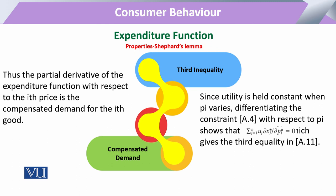Until and unless the expenditure function exhibits the property of Shephard's Lemma, it will not be possible to have that minimum level of expenditure. इसलिए utility को constant रखना है और तय करना है कि if the price of a commodity varies — either rises or declines — keeping in view whatever change there is, the change in expenditure with respect to the change in price equals x*, that unique amount of the commodity corresponding to that unique price p*.